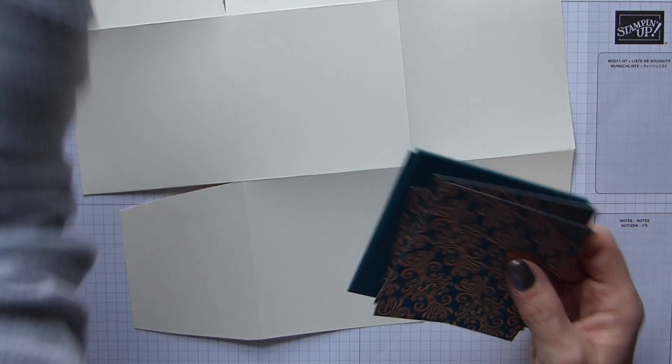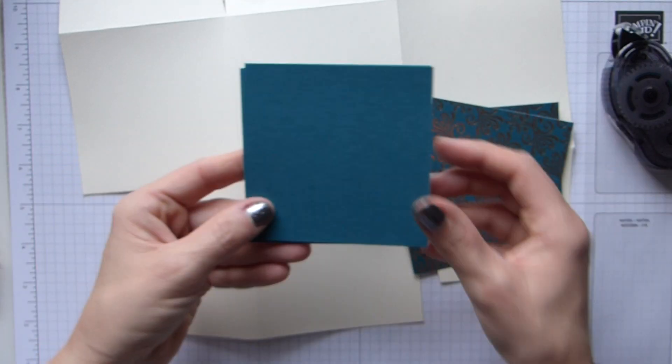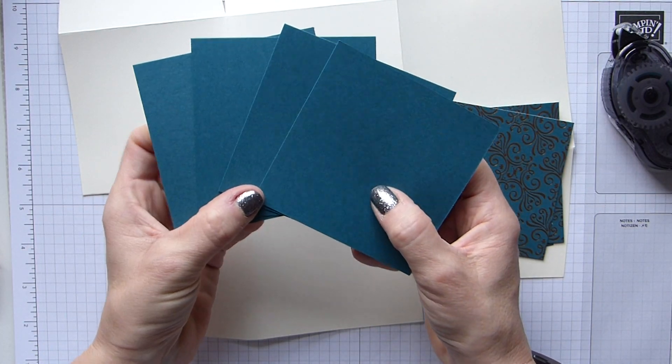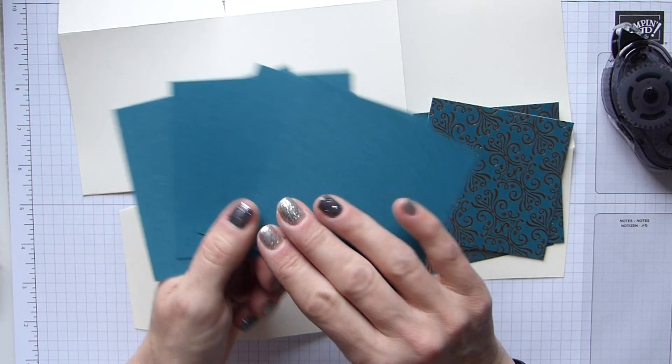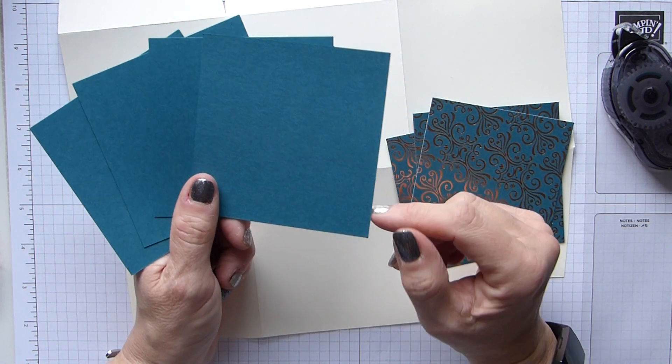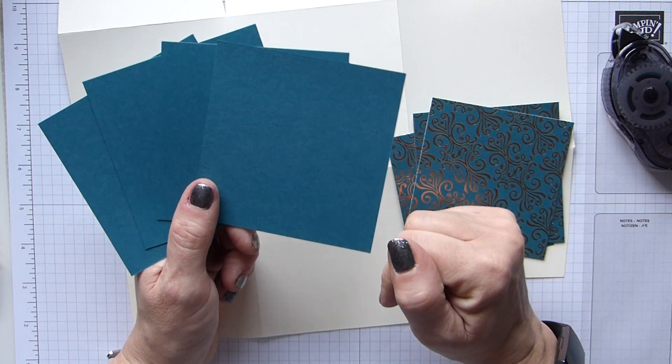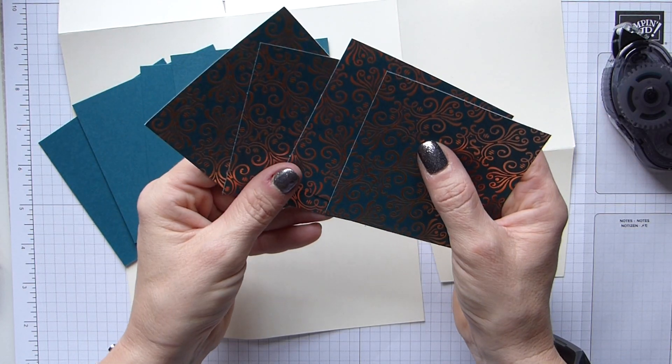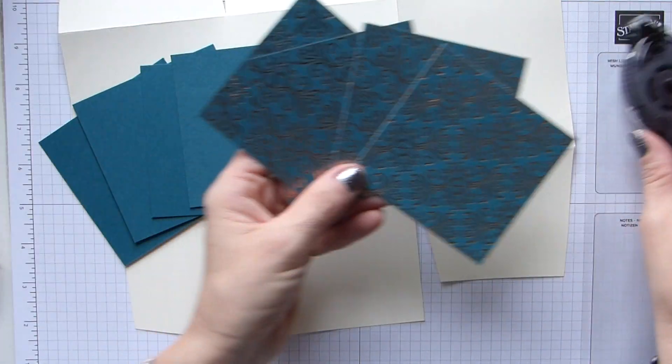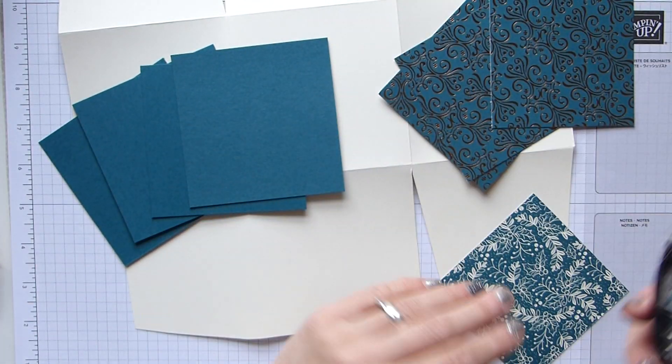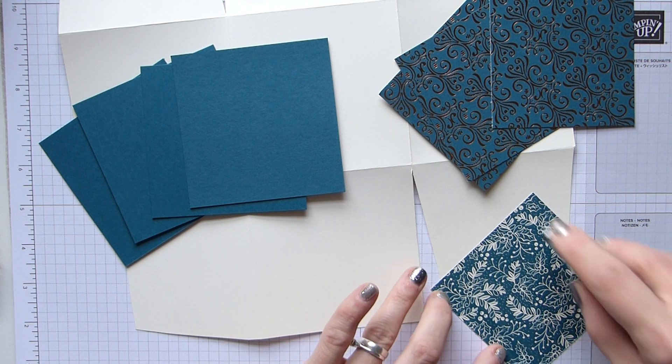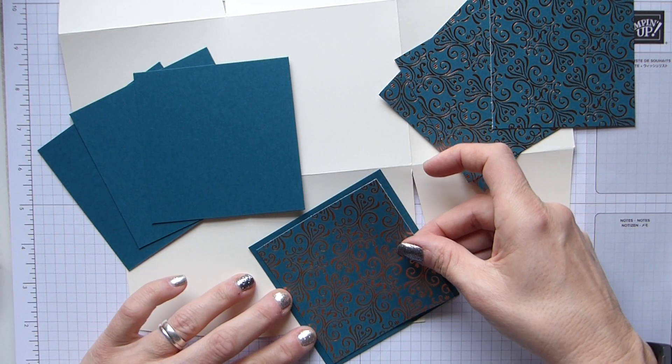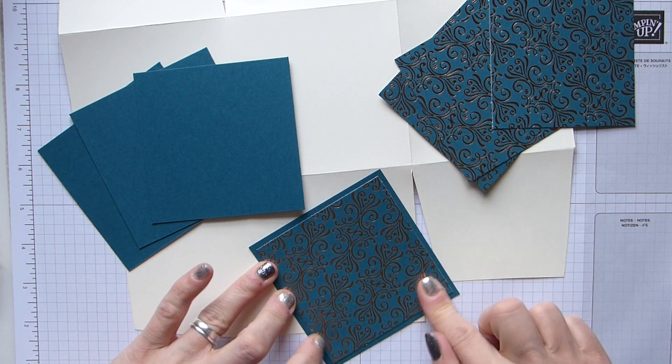So I've got my snail, I've got my panels here to put on the sides. The cardstock panels are three and three-quarters by three and three-quarters, which is nine and a half by nine and a half. And then my DSP layers are three and a half by three and a half, which is nine by nine.